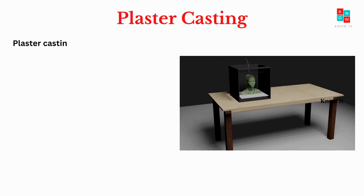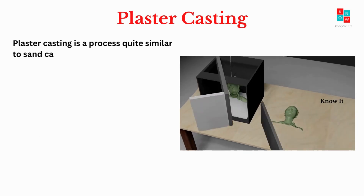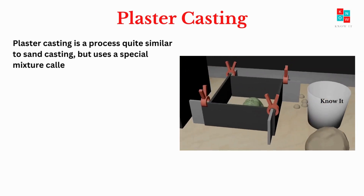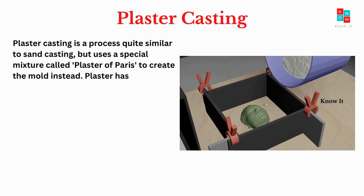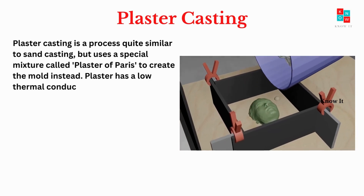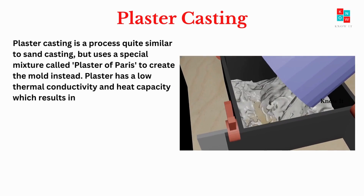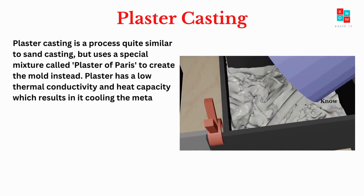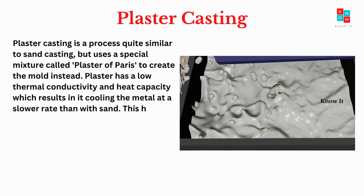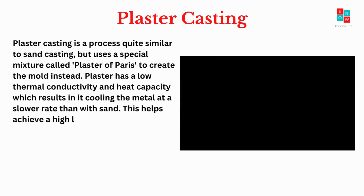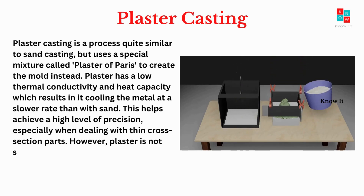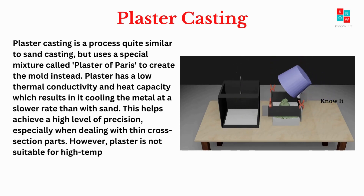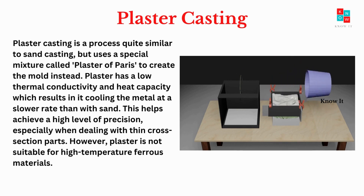Plaster casting is a process quite similar to sand casting, but uses a special mixture called plaster of Paris to create the mold instead. Plaster has a low thermal conductivity and heat capacity, which results in it cooling the metal at a slower rate than with sand. This helps achieve a high level of precision, especially when dealing with thin cross-section parts. However, plaster is not suitable for high temperature ferrous materials.